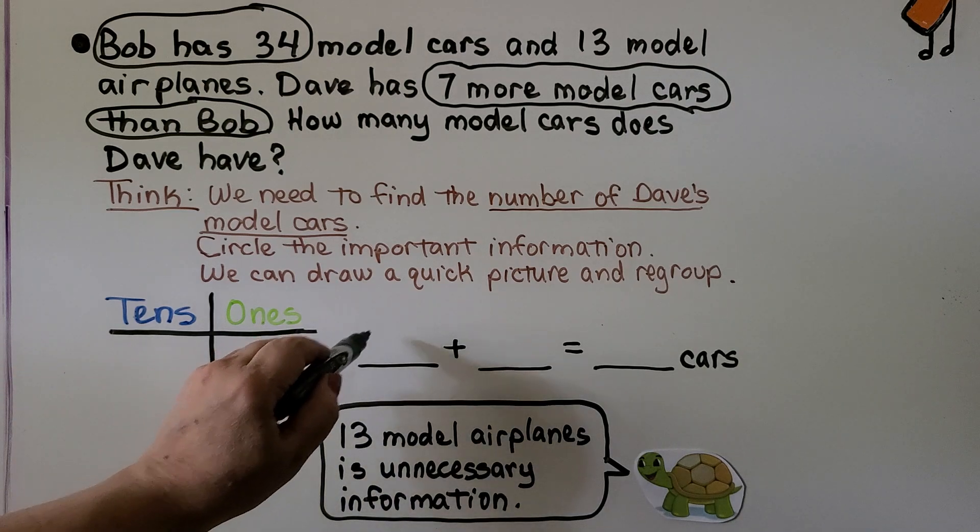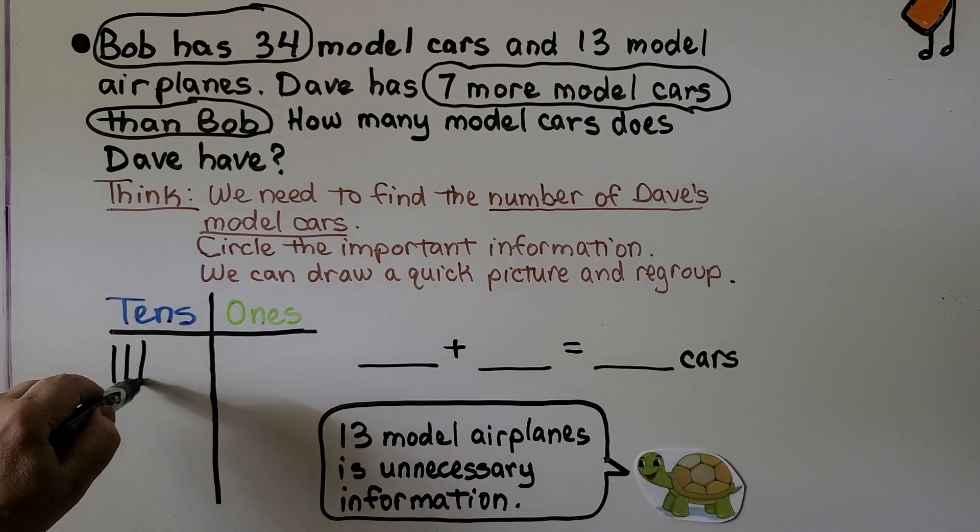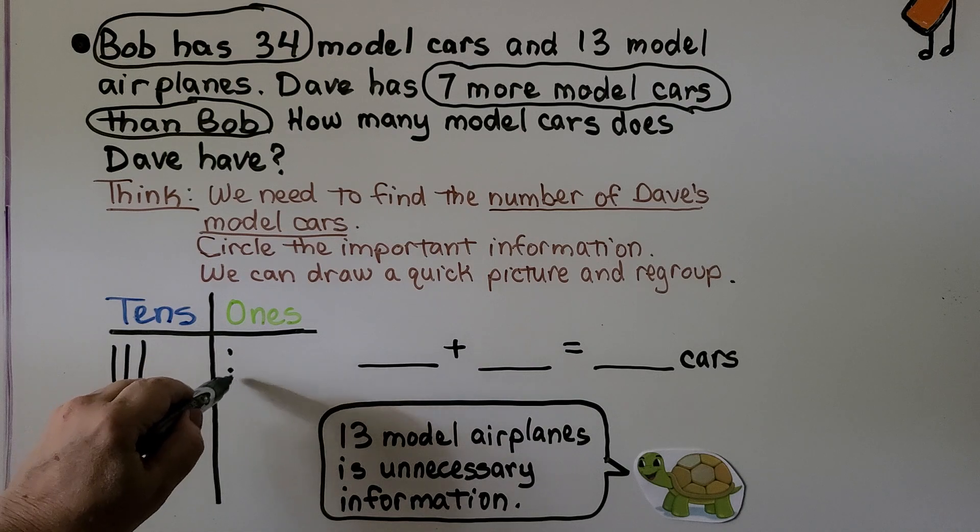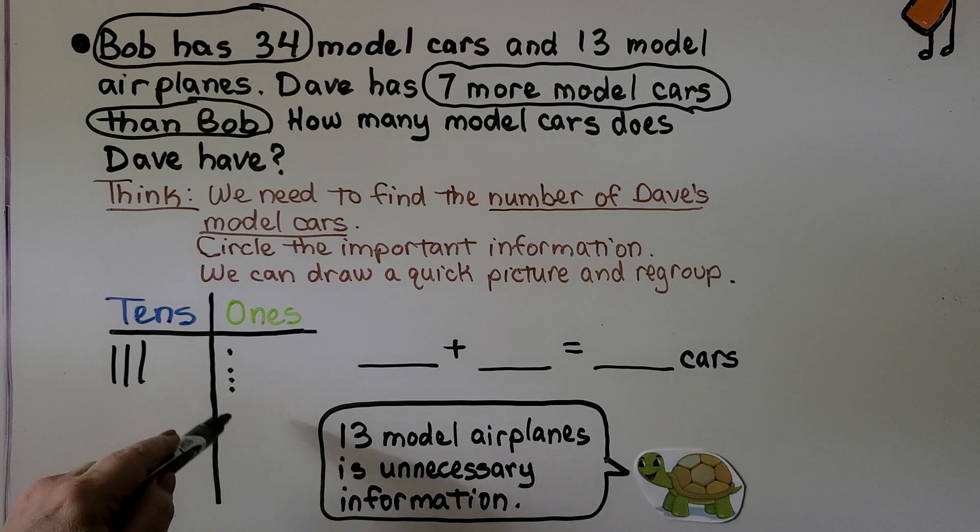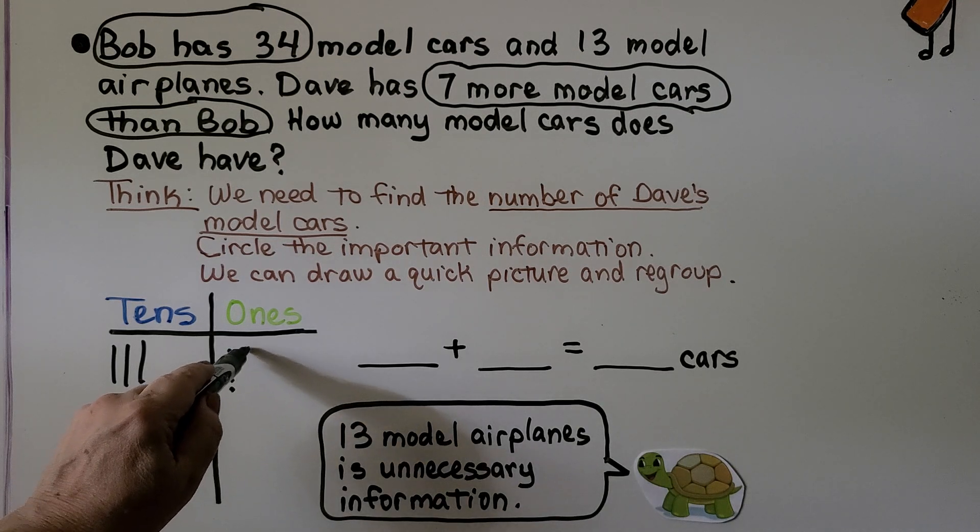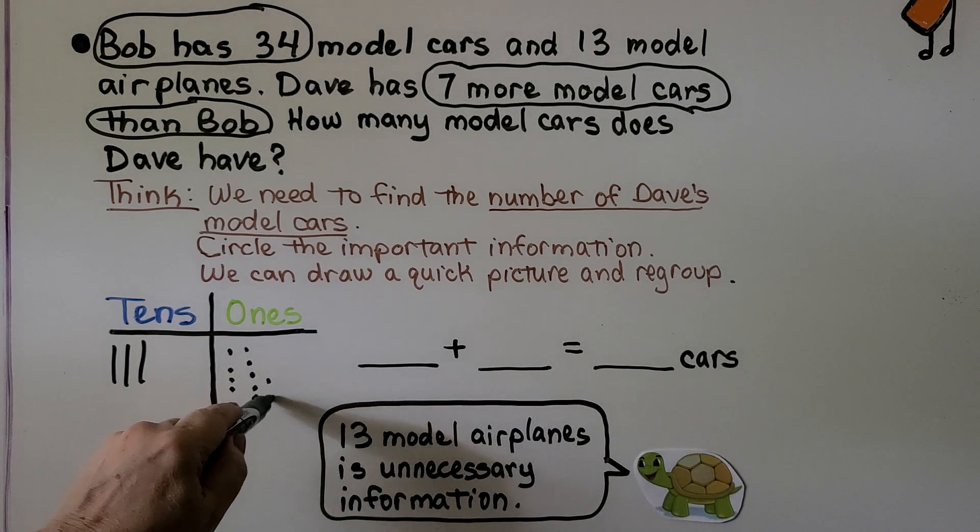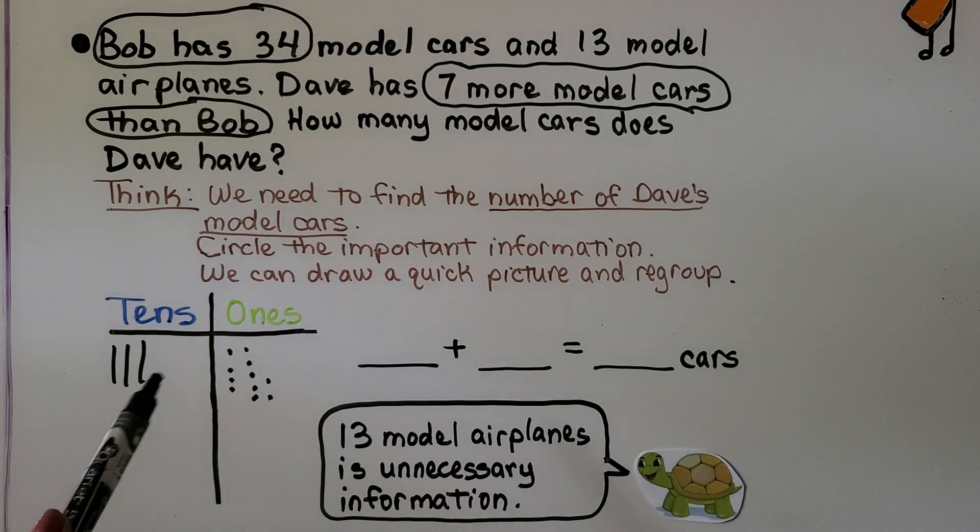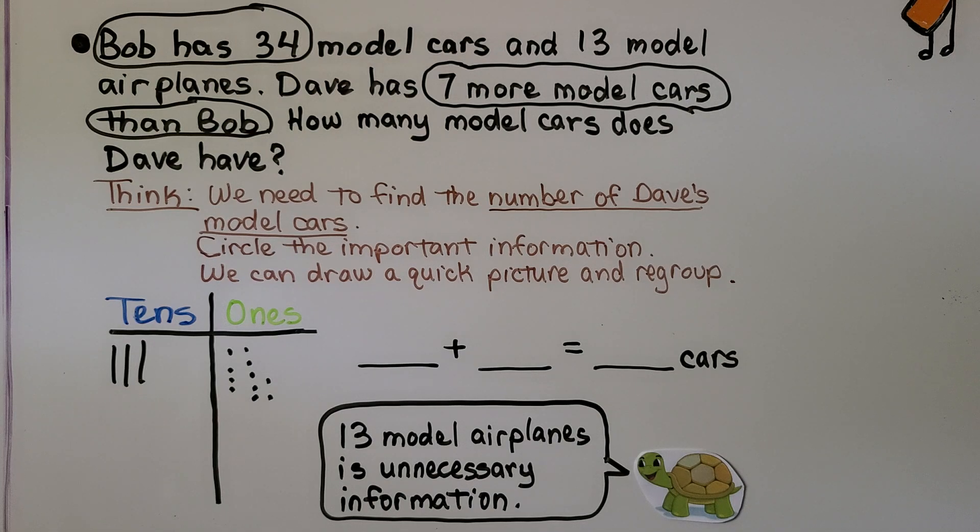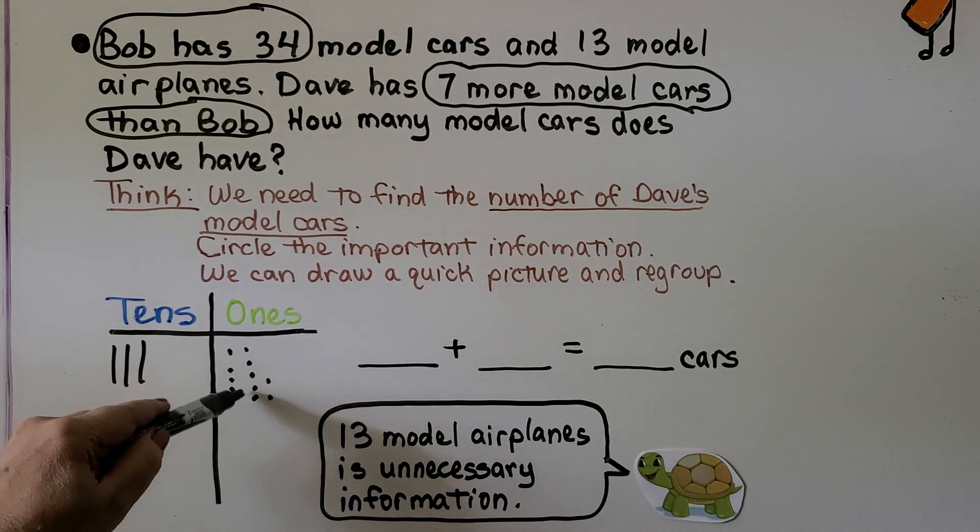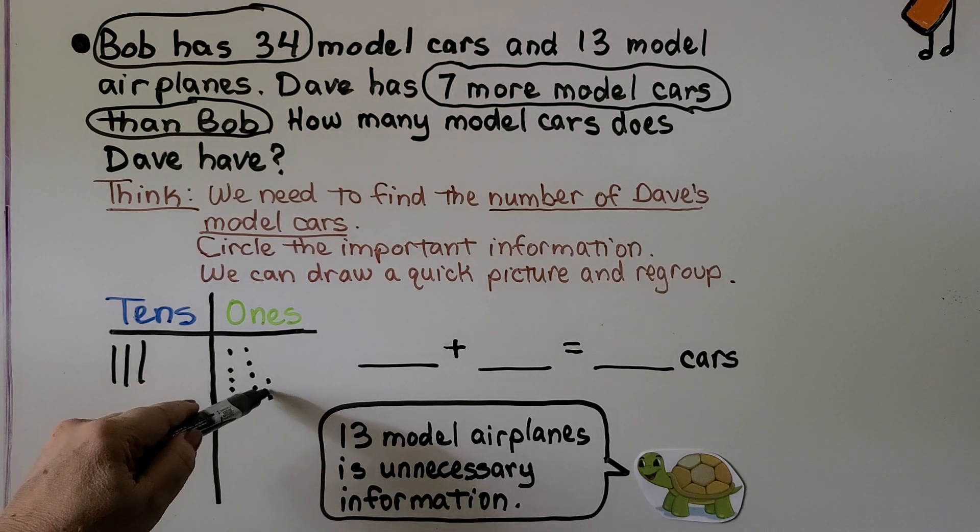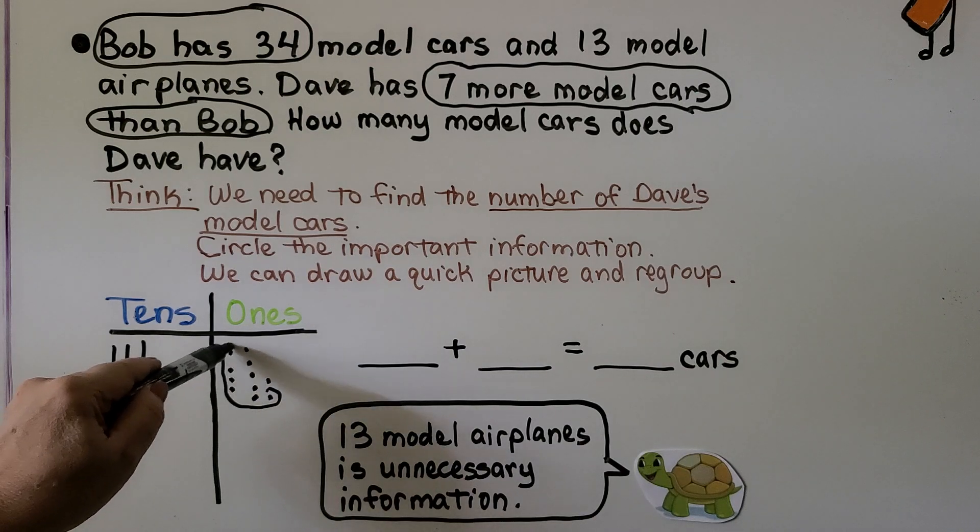We don't need to know how many Bob has. It says how many does Dave have? It's telling us Dave has seven more than Bob. Bob has 34. So we have 34. One, two, three tens, four ones. And Dave has seven more than that. So we can put another seven. One, two, three, four, five, six, seven. That's 34, and seven more would be how many Dave has. We can look at the ones to see if we can make a 10. I see four, five, six, seven, eight, nine, 10. Yeah, we can circle these and make a 10.